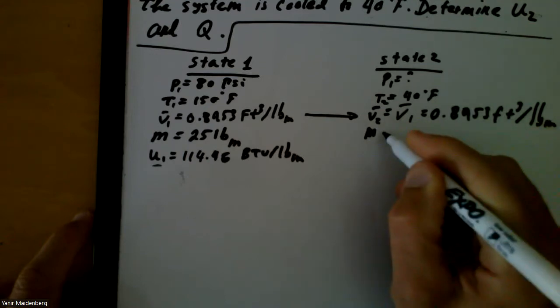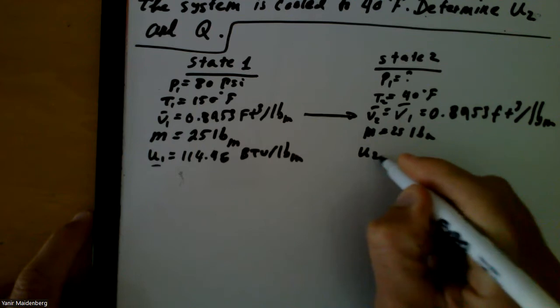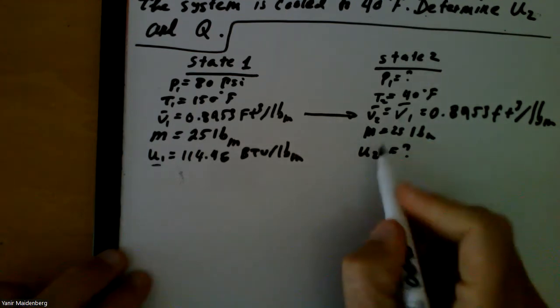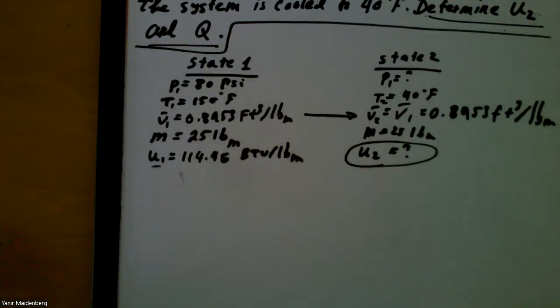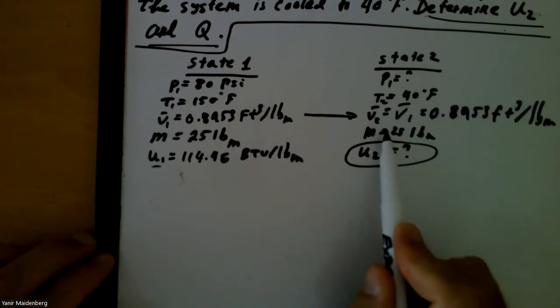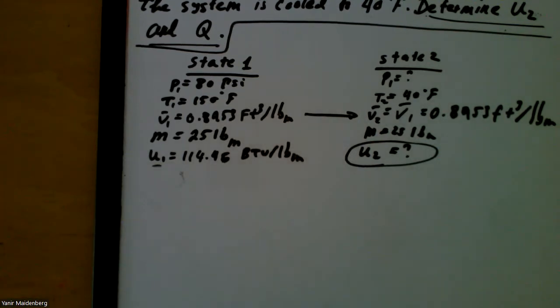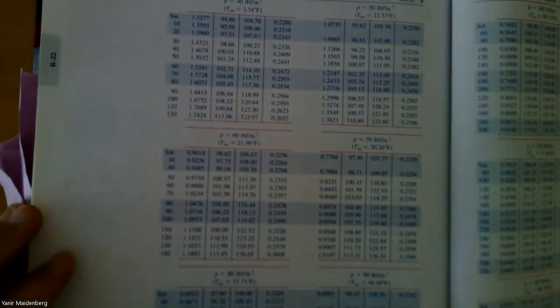We still need to find U2. The best approach is to use the tables with the two known variables: temperature of 40°F and specific volume of 0.8953 ft³/lbm. We have to choose between the superheated and saturated tables and perform a trial-and-error search to find where T = 40°F and V ≈ 0.8953 line up.